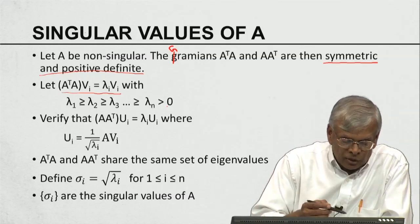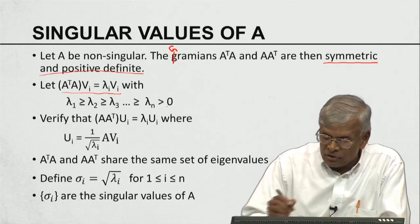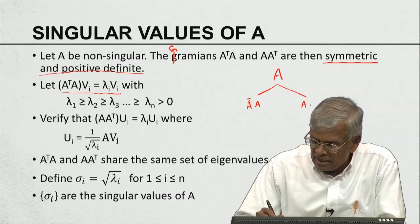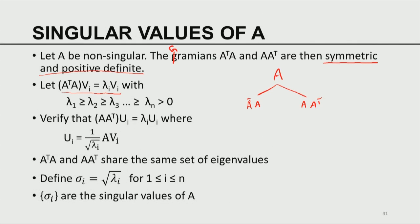I would like to relate the eigenvalues and eigenvectors of A's two Gramians. If you know the eigenvalues and eigenvectors of one Gramian, you can infer those of the other. As a homework problem to verify: AᵀA times U_i equals lambda_i U_i, where U_i is defined as (1/√lambda_i) A vᵢ. So if I know A and I know AᵀA's eigenpairs (lambda_i, v_i), then using A, v_i, and lambda_i, I can define the new vector U_i.